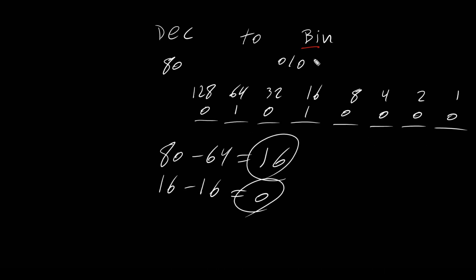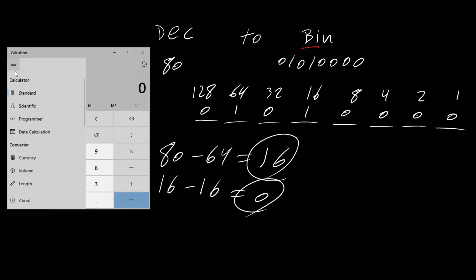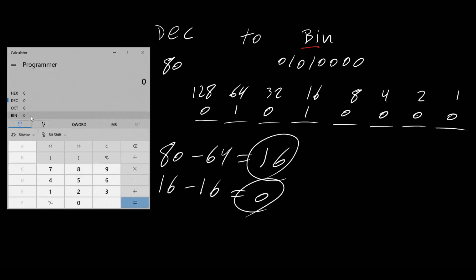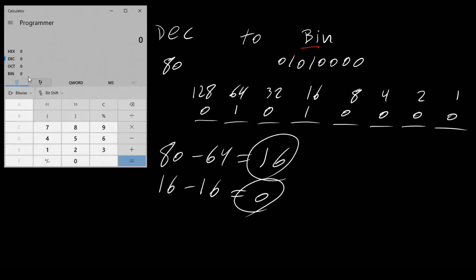So decimal number 80 is equivalent to 01010000 in the binary number system. Let's take a look using the calculator. We want to make sure programmer is selected and decimal is selected. Putting in 80, we get the binary 01010000. We can see the decimal value is 80.